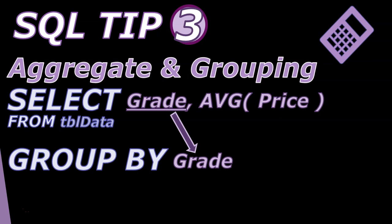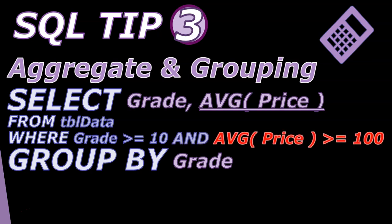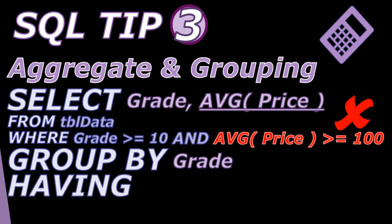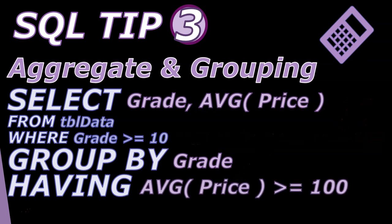So the moment you have an aggregate function alongside other fields, those other fields must be in the GROUP BY. A WHERE clause is fine — for example, WHERE grade >= 10. But if you want to filter on the aggregate function itself, such as where the average price is above 100, you cannot put the aggregate function in the WHERE clause. You must put that criteria in the HAVING clause instead.